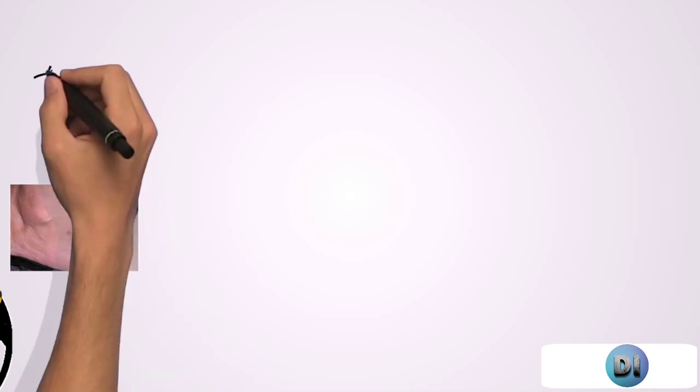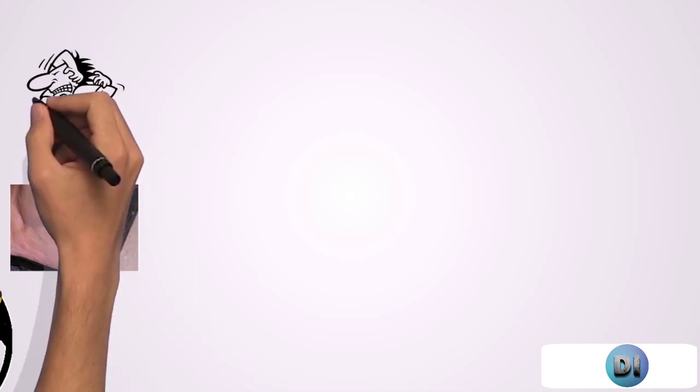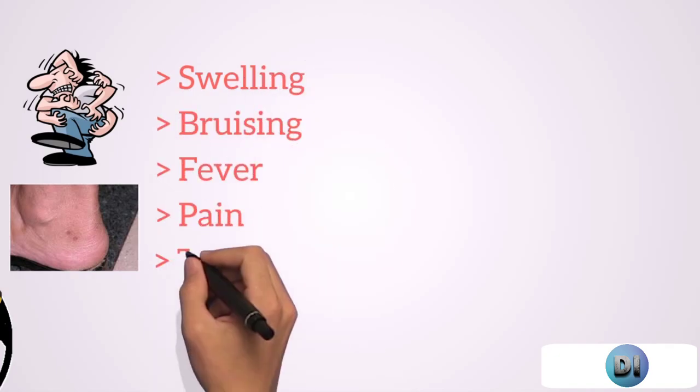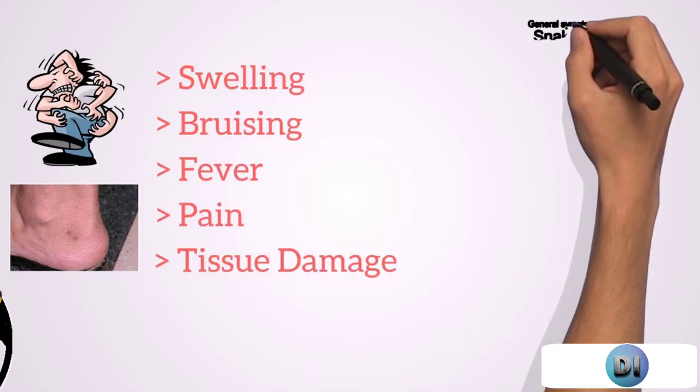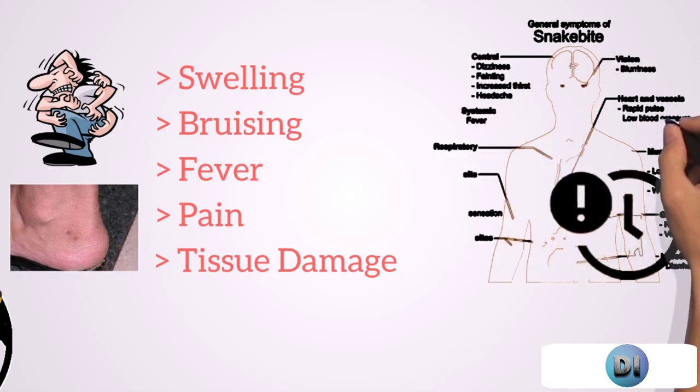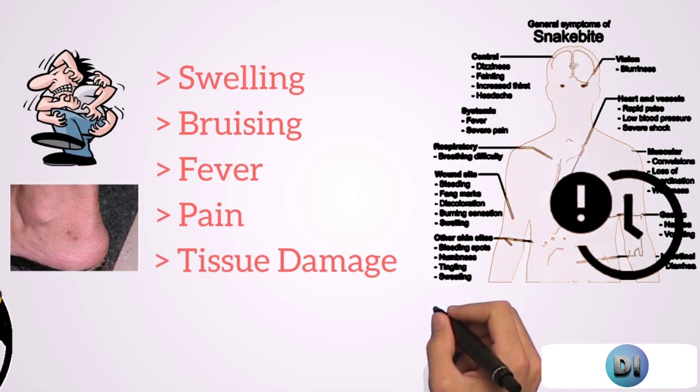Most snakes can bite without leaving venom and this is called the dry bite, which often results in irritation at the site. The average snakebite will have some symptoms of swelling, bruising, fever, pain, and sometimes localized tissue damage. Some people may also not feel the effects immediately. The symptoms may be delayed by hours or even days depending on the site.